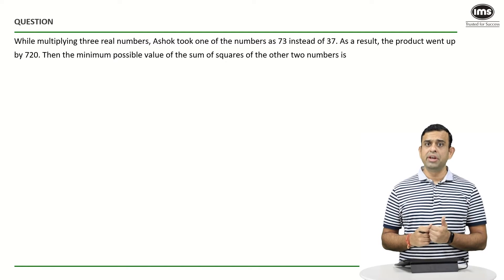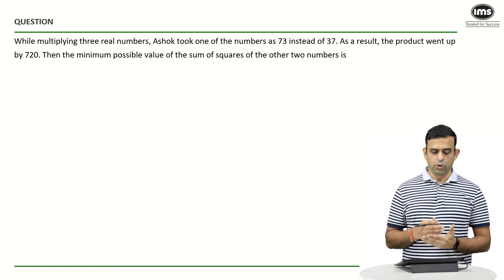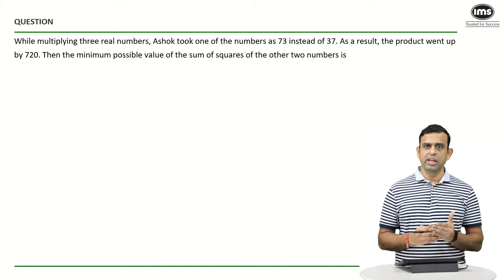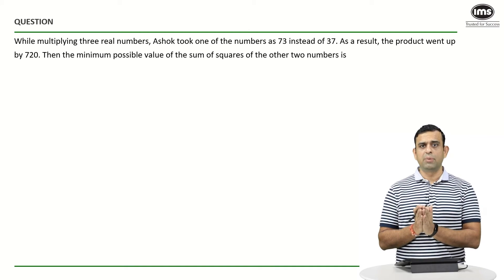...look at the word important, the real numbers they have mentioned. Ashok took one of the numbers as 73 instead of 37. What does it mean? The actual number should have been 37, but he took that number as 73 by mistake.